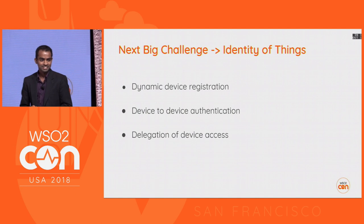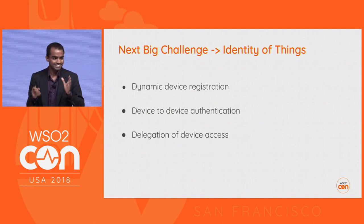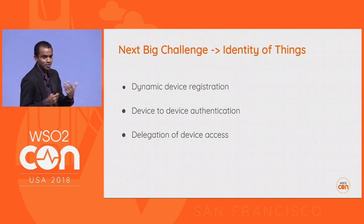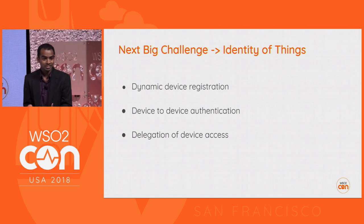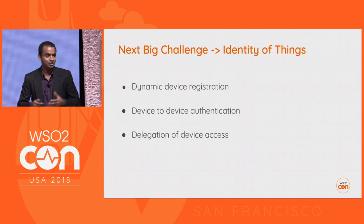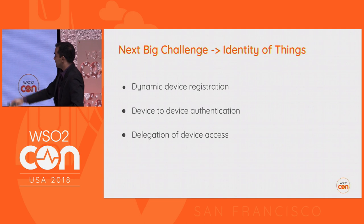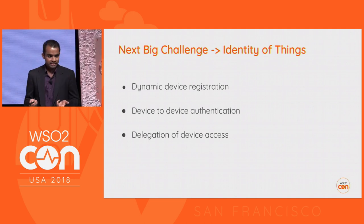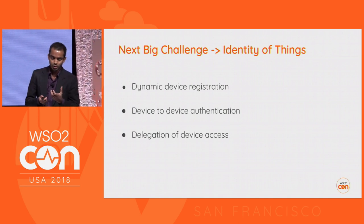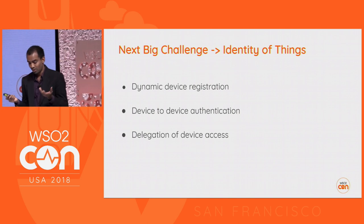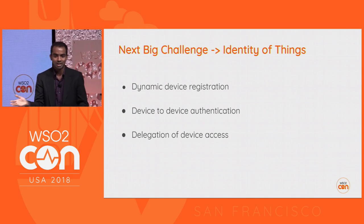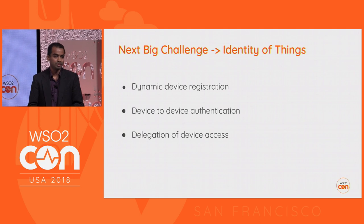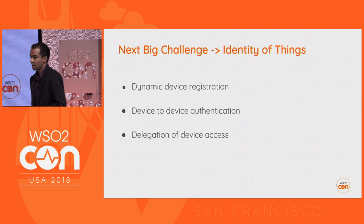There's a bigger challenge: identity of things. A huge number of devices are getting connected to the Internet every day, every minute, and each has its own identity. They need a way to dynamically register — you can't manually register each one. They want to authenticate between devices; for example, a sensor needs to authenticate so an actuator knows the data is from the actual sensor. And there's also delegation of device access — for instance, in my house if I have a CCTV camera, I might need to delegate access to my housemate under certain circumstances.